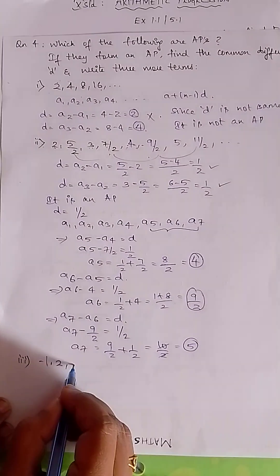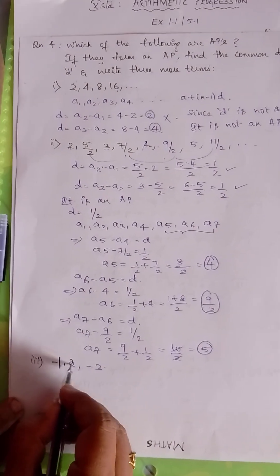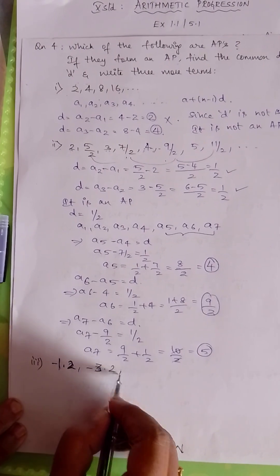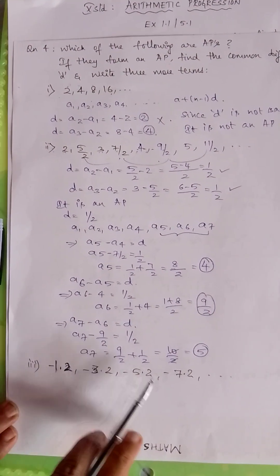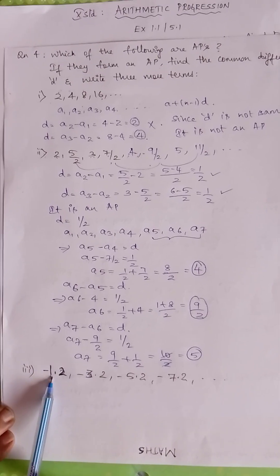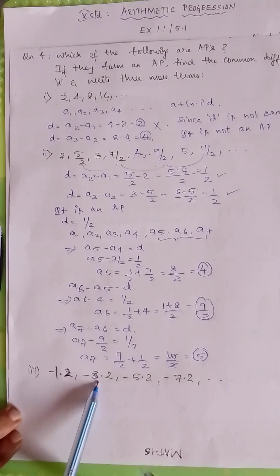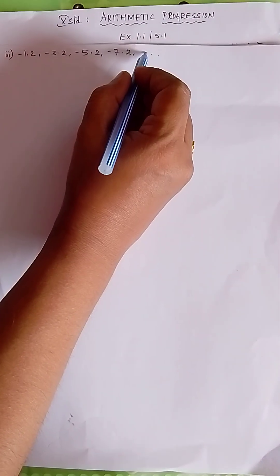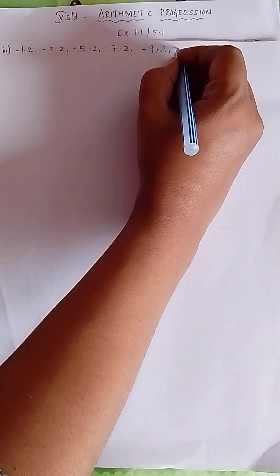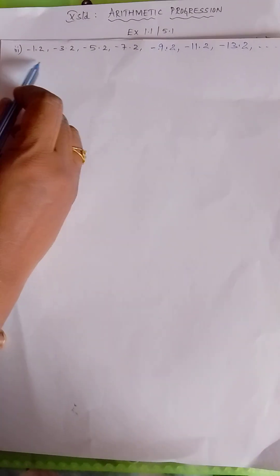We move on to the third problem, given as: -1.2, -3.2, -5.2, -7.2. You can see the pattern — the distance is 2 each time. For example, -1.2 plus (-2) = -3.2; plus (-2) = -5.2. So obviously this is an AP, D = -2, and the three next terms are -9.2, -11.2, -13.2. Now let us show this formally.